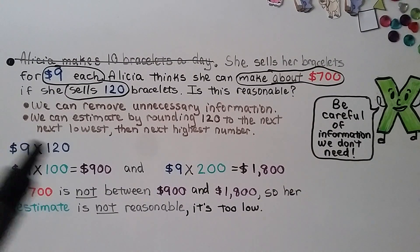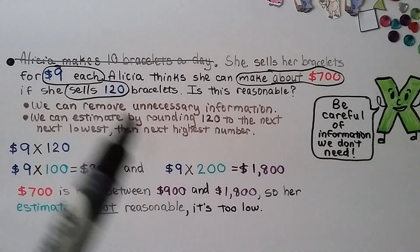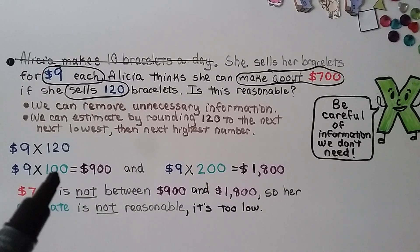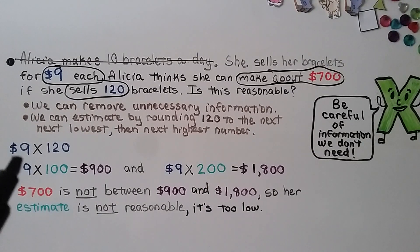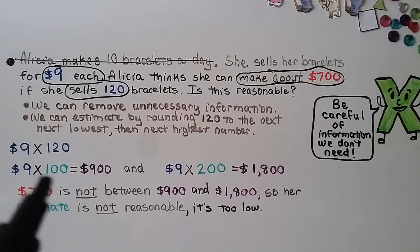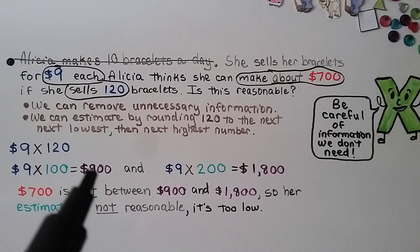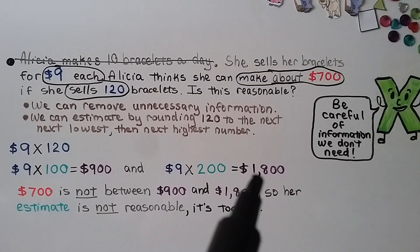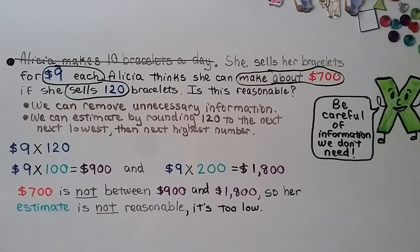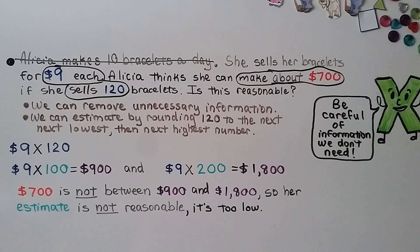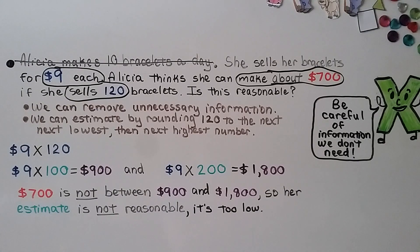We estimate by rounding 120 to the next lowest, which is 100, and the next highest, which is 200. For 9 times 120: $9 times 100 equals $900, and $9 times 200 equals $1,800. She thought she'd make about $700, but that's not between $900 and $1,800. So her estimate is not reasonable — it's too low. She underestimated the amount.